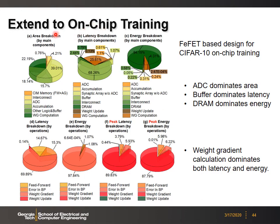Extending the framework for on-chip training, the breakdown shows that ADC dominates the area, the buffer dominates the latency, and DRAM access dominates energy for training. Among all training steps — forward pass, backward propagation, weight gradient calculation, and weight updates — the weight gradient calculation (multiplication between error and activation) contributes the most latency and energy in the training process.